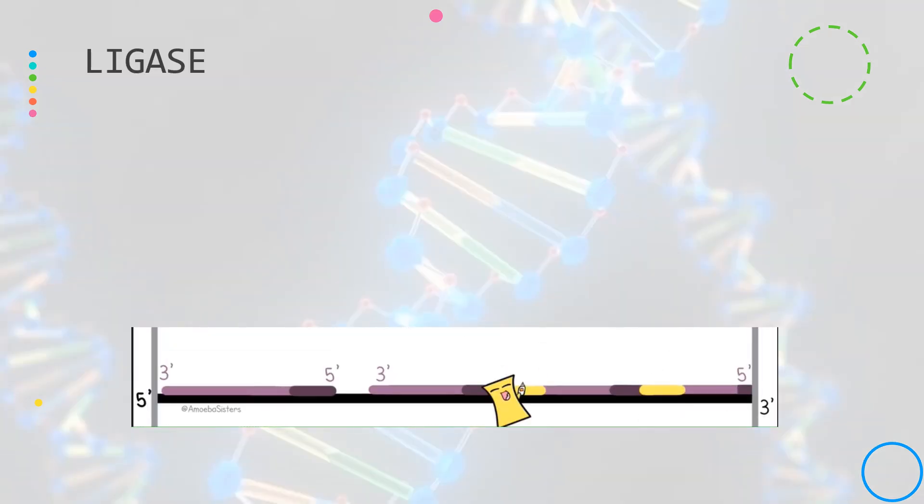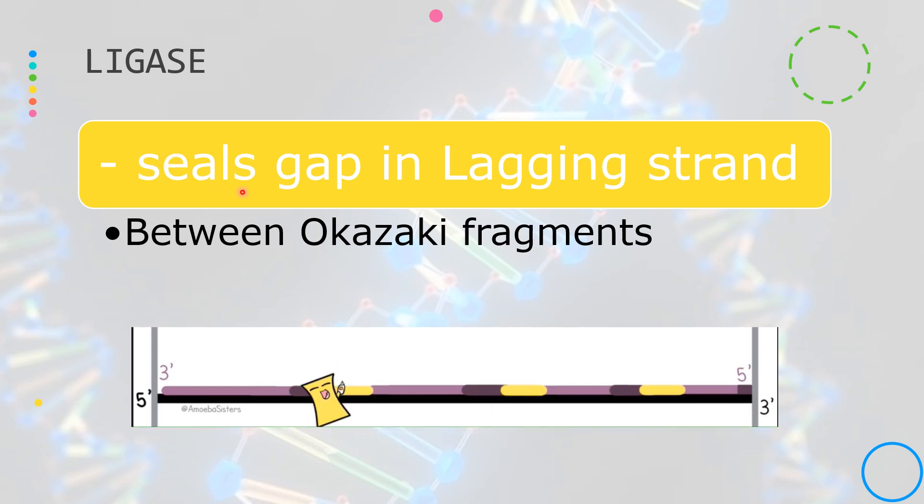The last enzyme is the ligase. This would seal the gaps found in the lagging strand in between the Okazaki fragments. When the gaps have been filled up, then that would create one continuous DNA strand.